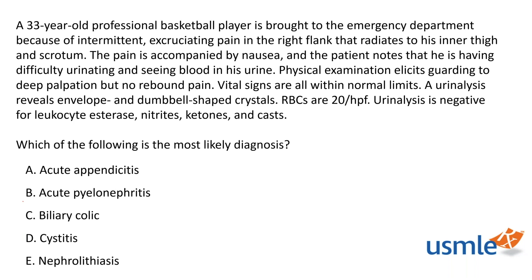B, acute pyelonephritis, was the second most chosen answer, and it would be the next best choice if nephrolithiasis weren't an option. For pyelonephritis, we'd expect flank pain with fever — fever plus flank pain should make you think pyelonephritis, an infection of the kidney. Think of it like: fever and murmur suggests endocarditis, fever and headache suggests meningitis or encephalitis. In our case there was no fever, just hematuria and flank pain, which is more consistent with nephrolithiasis. You'd also expect signs of infection on urinalysis: pyuria, elevated white blood cells, leukocyte esterase, and nitrates.